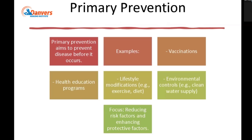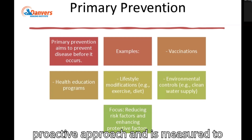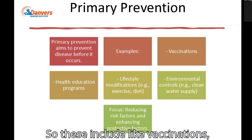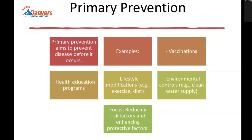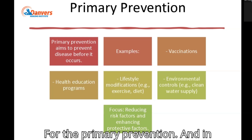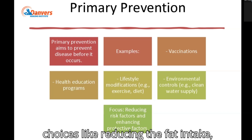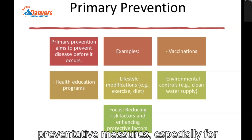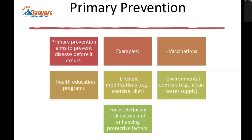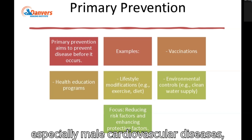For primary prevention, these are proactive strategies and measures to avoid the development of diseases. These include vaccinations like flu vaccines and pneumonia vaccines. In addition to that, healthy lifestyle choices like reducing fat intake and reducing sugar intake — those are preventative measures, especially for someone who does not have the disease yet. For example, African American males are at higher risk for cardiovascular diseases.